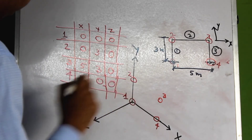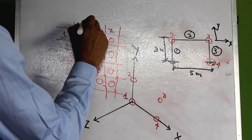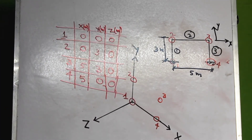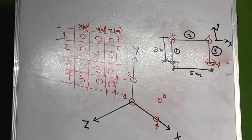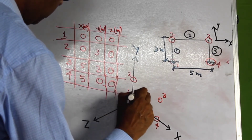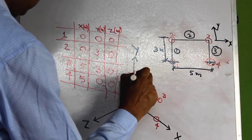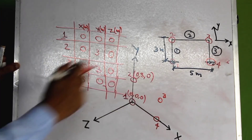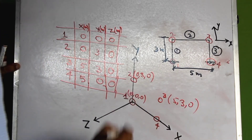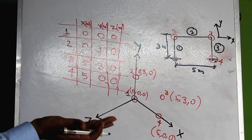The coordinates of all nodes are summarized in a table, with values in meters: node 1 is (0, 0, 0), node 2 is (0, 3, 0), node 3 is (5, 3, 0), and node 4 is (5, 0, 0). These can also be represented in bracket notation.